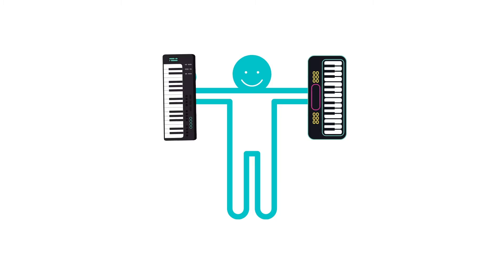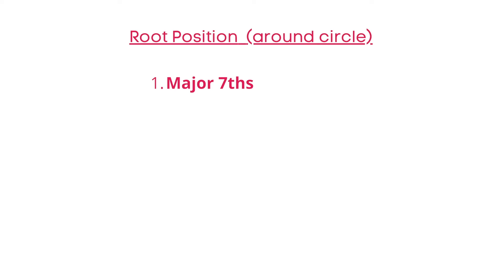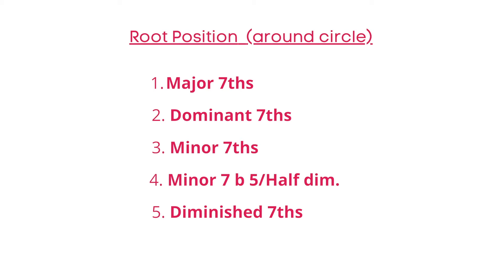Now let's get into your exercises. Your first assignment is to play each of these chords in root position around the circle. Remember, the circle of fourths is what we're going to use, not fifths. Start with major sevenths — play all in root position around the circle. Next, play all the dominant sevenths around the circle in root position, minor sevenths around the circle in root position, minor seven flat five or half diminished the same way, fully diminished seventh around the circle, and minor major seventh around the circle.